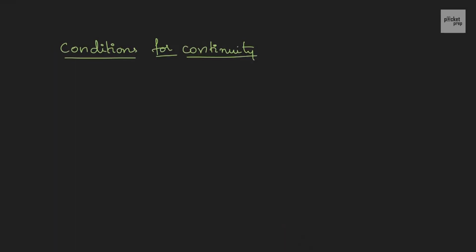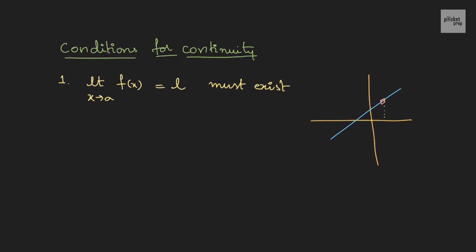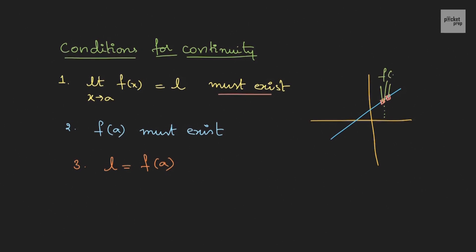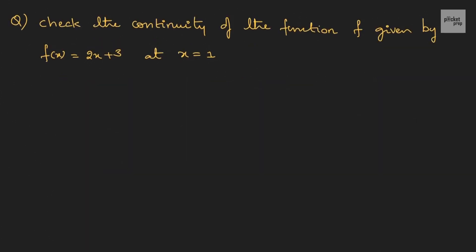Let's reframe this definition into three conditions. The first condition is that the limit of f(x) equal to L must exist — that is, the left-hand value and the right-hand value must be equal. The second condition is that f(a) must exist, meaning there should be a defined value when we substitute a. The third condition is that L must equal f(a) — the left-hand side, right-hand side, and the value must all equal f(a). Then we say the function is continuous.